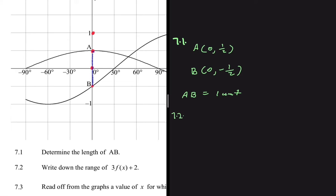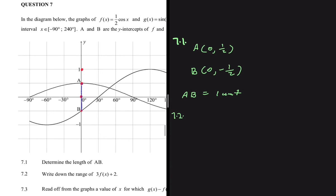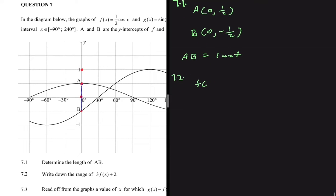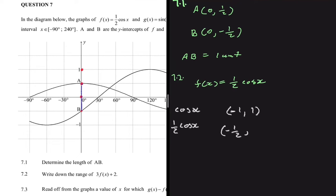Let's move to 7.2. The question is saying: let's write down the range of 3f(x) + 2, where f(x) = ½cos(x). Starting from the basics: the range of cos(x) is minus 1 to 1. For the range of ½cos(x), multiply minus 1 by a half and multiply 1 by a half, giving minus a half to a half.